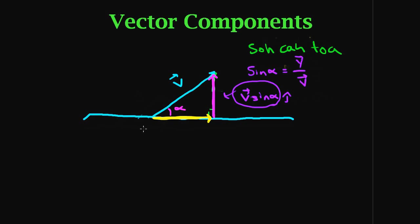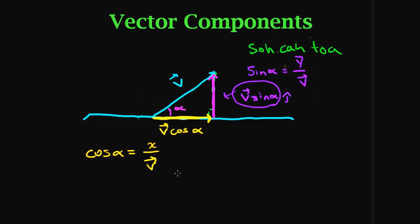For the x component, it's the adjacent side, so we use cosine: cosine of alpha equals your x component over your hypotenuse V. So x equals V cosine alpha. In order for us to evaluate vectors in more than one dimension, we need to know their components.